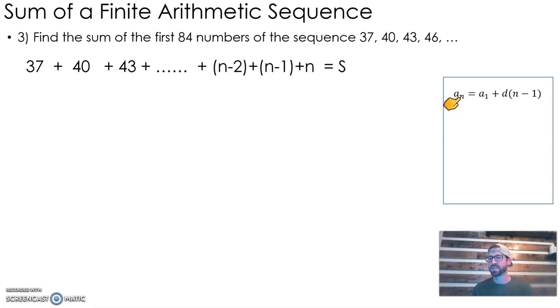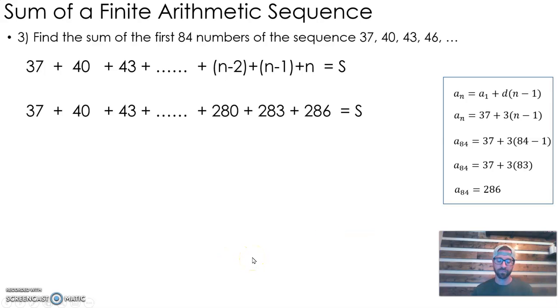We've got 37 plus 40 plus 43. The 84th number in the sequence, I don't really know, so it would be hard to put a number here. Since this is an arithmetic sequence, we can use our knowledge of writing rules. Our explicit rule takes the form of the first term plus the common difference times n minus 1. Our first term is 37 and our common difference is 3. We're trying to find the 84th term, so I substitute 84 for n. That gives us 37 plus 3 times 83, which means the 84th term is 286.